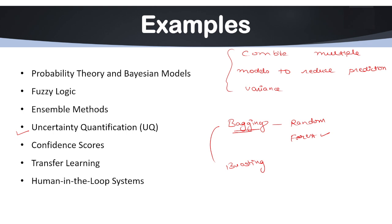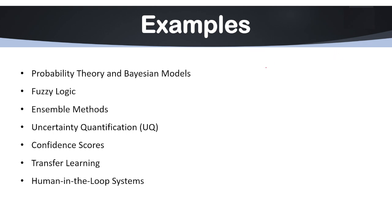Next we have confidence scores. Confidence scores are models that provide confidence scores with predictions, giving users insight into how certain the system is about its output. If we want to check the certainty of output of our system, we must follow this method.